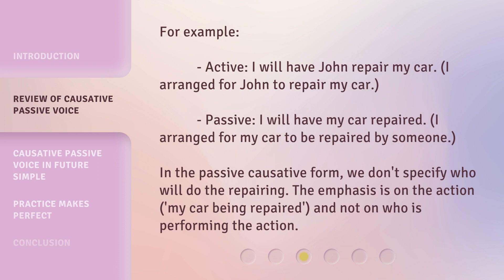For example — Active: 'I will have John repair my car.' I arranged for John to repair my car. Passive: 'I will have my car repaired.' I arranged for my car to be repaired by someone. In the passive causative form, we don't specify who will do the repairing. The emphasis is on the action — my car being repaired — and not on who is performing the action.